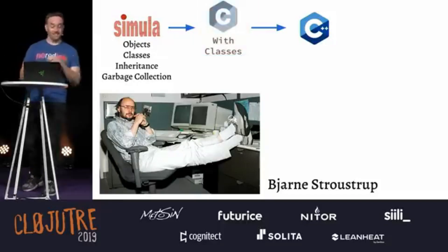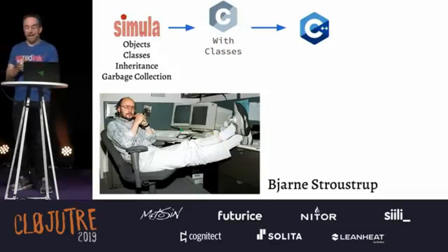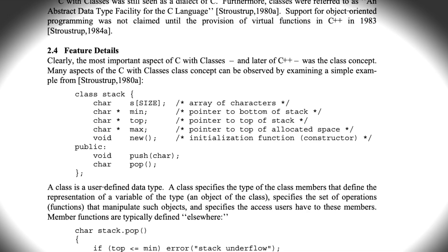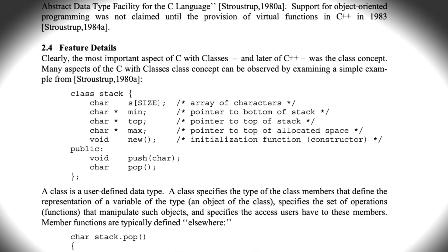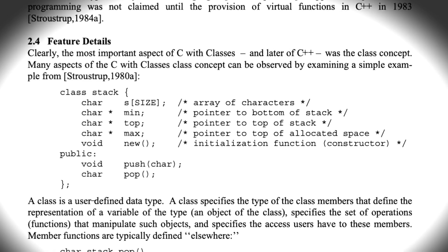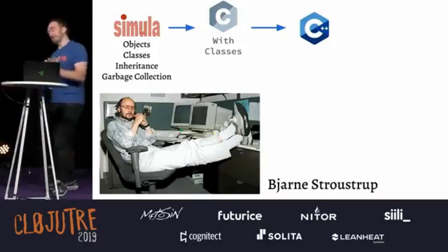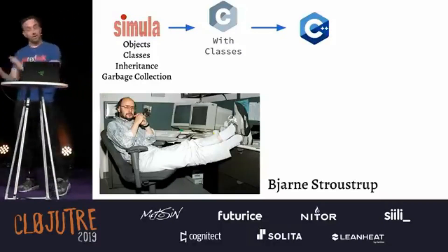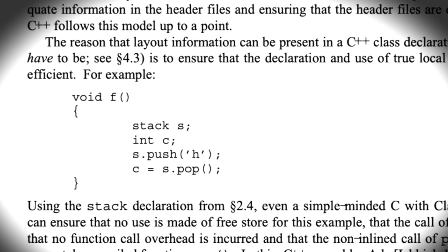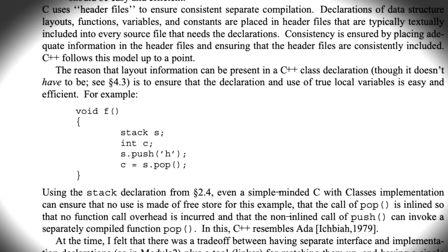C with Classes. This language had a very specific goal: it was to have C, but with classes. And actually, it's not quite true — it was C with classes, but also a stronger type system. He wanted to make the type checker a little bit stronger.